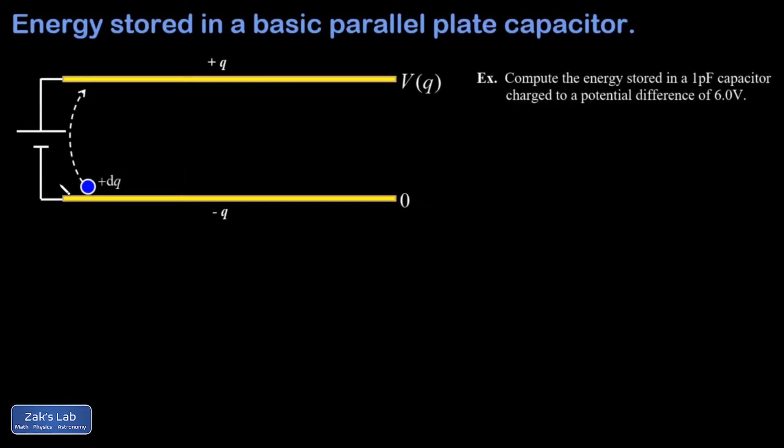All right, so here's the basic setup for the derivation. I'm imagining starting with a discharged capacitor, and then I hook up to a power source, and I start to pump charge from the negative plate to the positive plate. So I'm taking little charges dq, ripping them off the bottom plate, and piling them up on the top plate. As this charge separation grows, the potential difference between the plates grows, and that's why I wrote it as v of q. It's a function of how much charge is on there. The bigger q is, the bigger v is.